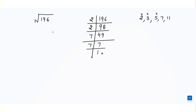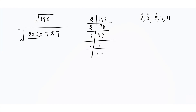So 196 can be written as 2 × 2 × 7 × 7. Whenever we are calculating a square root, we have to make pairs of the same number. This is one pair of 2 and one pair of 7. From each pair, we write the number only once — one 2 and one 7 — so the square root of 196 is 14.